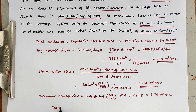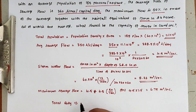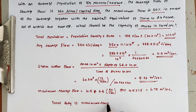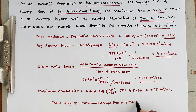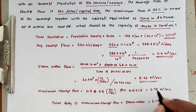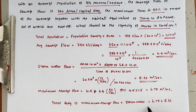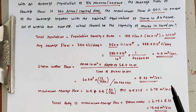Now the total quantity — the capacity of the sewer — is maximum sewage flow plus stormwater: 6.75 plus 8.33. Total quantity we get the value of 15.08 meter cube per second. This is the final answer — the capacity of sewer required. This is the method we can use to solve the problem.